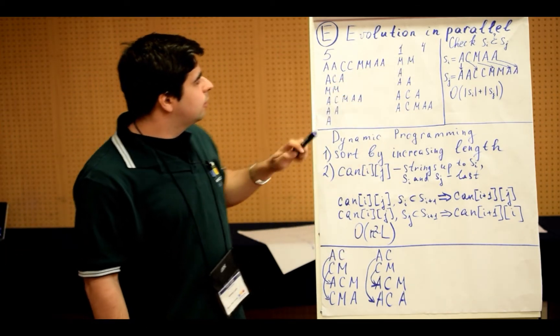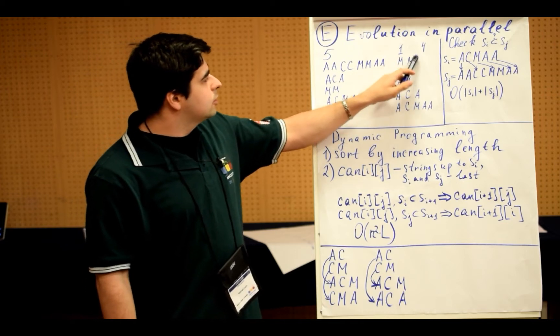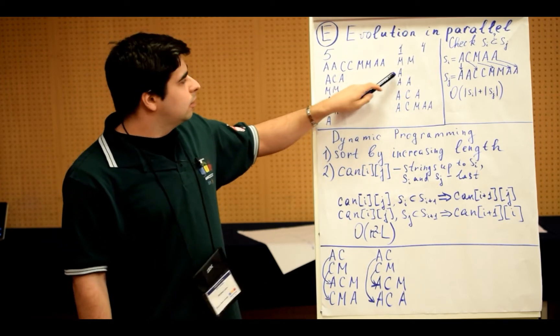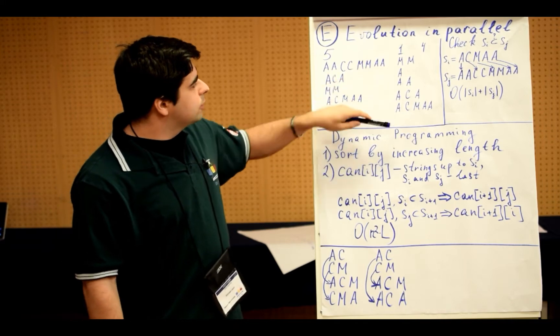So in this example, the answer is that one ancient species is MM, and another one is A, and then everything else evolved from it.